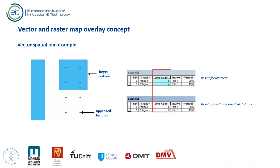Another example of a vector map overlay function is the spatial join operation, which joins attributes from one feature to another based on the spatial relationship. The target features and the joined attributes from the join features are written to the output feature class. For example, we can use this function to calculate the number of mines in a given administrative unit, or calculate the total population of all towns in an administrative unit using a sum statistic.